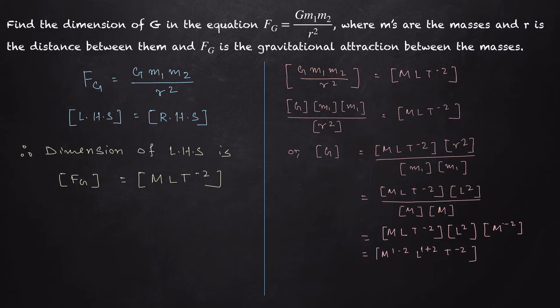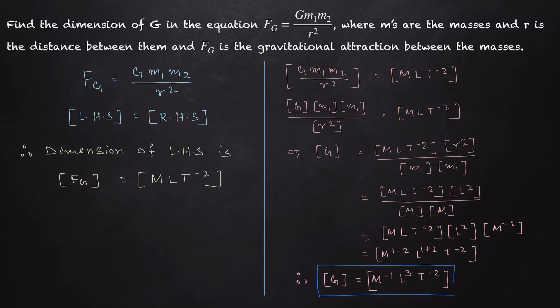Collecting similar terms: M^(1−2) · L^(1+2) · T⁻² = M⁻¹ · L³ · T⁻². Therefore, the dimensional formula for G is M⁻¹L³T⁻².